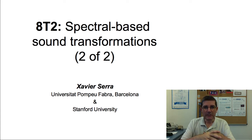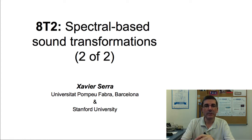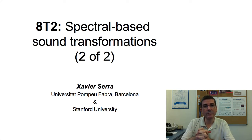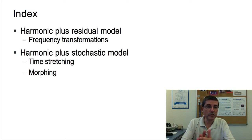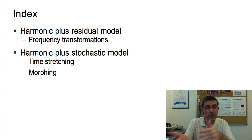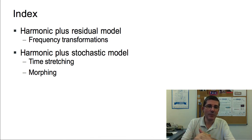Welcome back to the course on audio signal processing for music applications. In the previous theory lecture, we started talking about sound transformations, in particular about how to use the short-time Fourier transform and the sinusoidal model to manipulate sounds. In this second theory lecture, I want to continue that and talk about the harmonic plus residual model and how it can be used for transforming the frequencies of the harmonics, and then the harmonic plus stochastic model and how it can be used for time stretching and morphing operations.